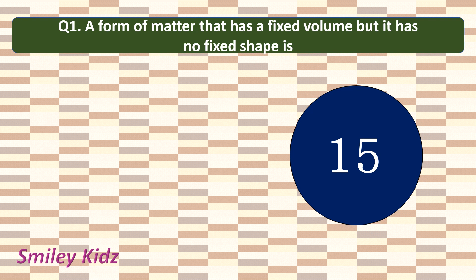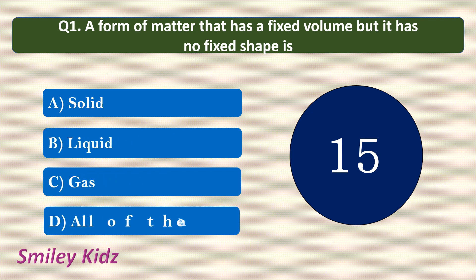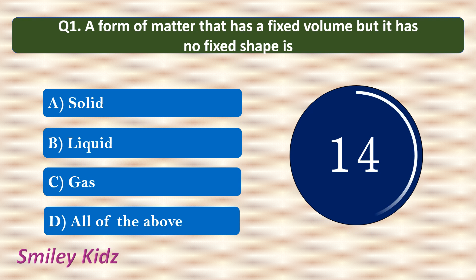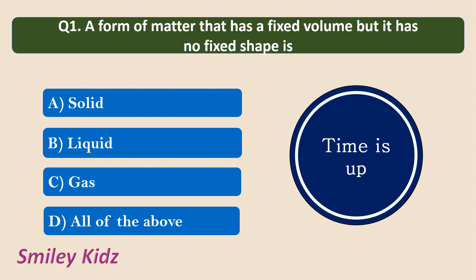Question number 1. A form of matter that has a fixed volume but no fixed shape is? Options are: solid, liquid, gas, or all of the above. The correct answer is liquid. Liquids have no fixed shape but have fixed volume. They take up the shape of the container in which they are kept.